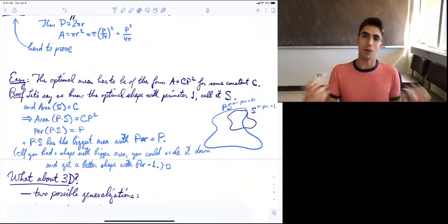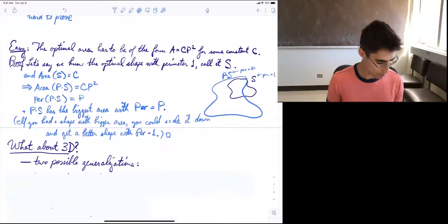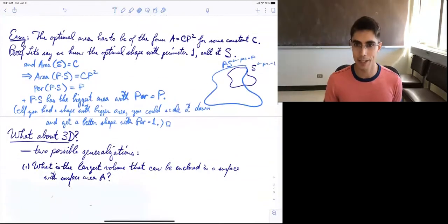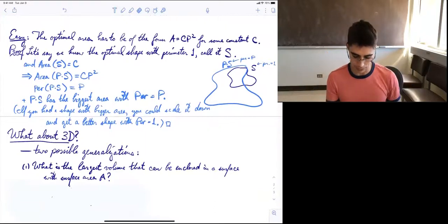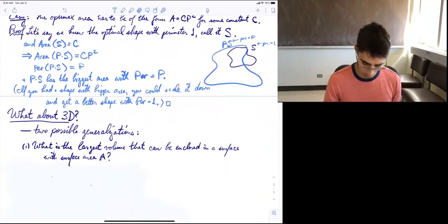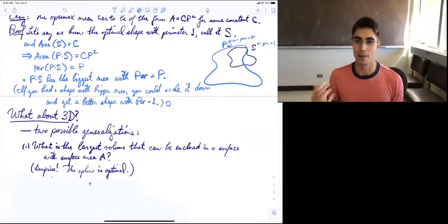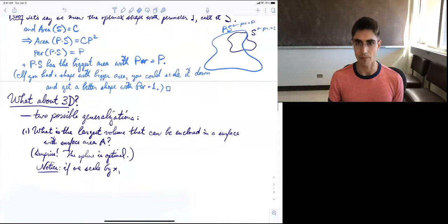One way of coming up with a new problem related to this is to say, okay, we did it in 2D. What about 3D? And in 3D, there are two possible generalizations you can have. One is you could say, now instead of a region with a perimeter, I have a region with surface area. So what is the largest volume that can be enclosed in a surface with surface area A? And surprise, surprise, the best thing you can do is the sphere.